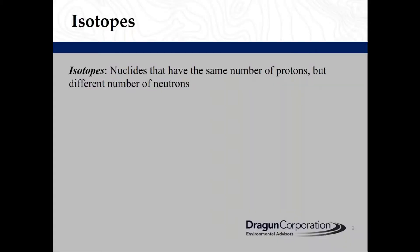I will start off with the definition of isotopes. Isotopes are nuclides of the same element with equal number of protons and different number of neutrons. For example, oxygen isotopes have eight protons but different number of neutrons, which gives them different atomic weights and therefore different physical properties.